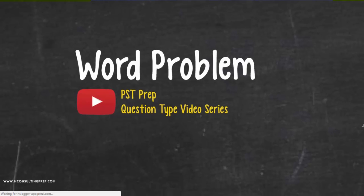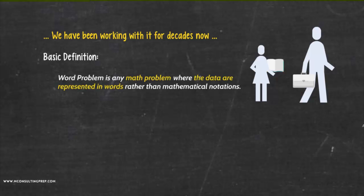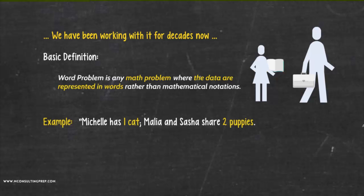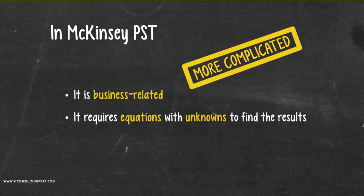Why is it interesting? Well, we've all been working with Word Problems for decades now, whether it's elementary school students or consultants on Wall Street. The context and the stakes can change, but the principles behind them are no different. In its most basic definition, a Word Problem is any math problem where the data are represented in words rather than mathematical notations. This definition covers super straightforward questions like: Michelle has one cat, Malia and Sasha share two puppies — how many pets does the family have? But when we talk about word problems in the context of the McKinsey PST, we refer to a more complicated form. Not only is it business-related, but it also requires you to set up equations with unknowns and solve for the result.